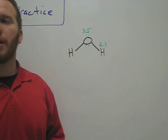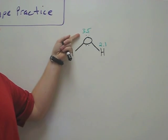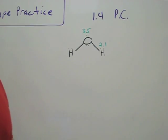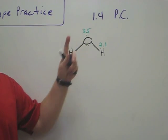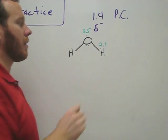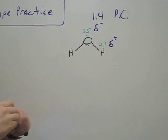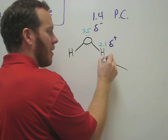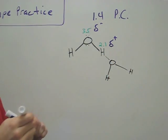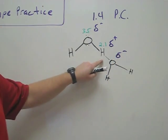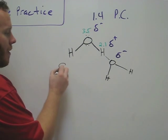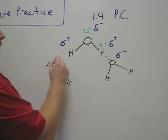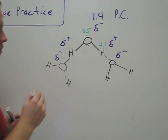Now let's look at why water is a liquid at room temperature. We have the electronegativity value of 3.5 and 2.1, which is a difference of 1.4, meaning it's polar covalent, so there are partial charges. Because oxygen is stronger, it gets more of the electron and is partially negative, leaving hydrogen partially positive. So when this water molecule comes close to another water molecule, there is an attraction between the H and the O, because opposites attract. This is called hydrogen bonding — the partially positive is attracted to the partially negative.